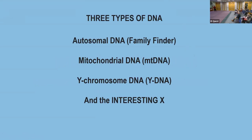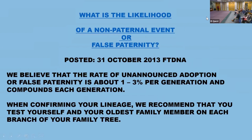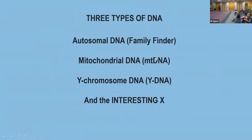We're having a little technical issue with the pointer, but there are three types of DNA. Autosomal on Family Tree DNA is called Family Finder. Mitochondrial DNA is also on Family Tree DNA — Kathleen Brandt did talk about that a little bit — and it's called mtDNA. Y-chromosome is the male chromosome, and that is called the Y-DNA. There are a variety of levels of tests.